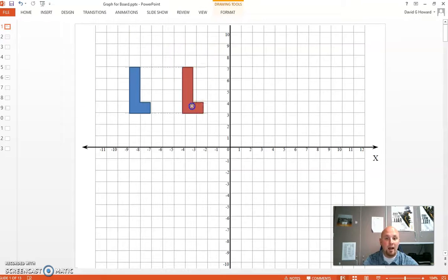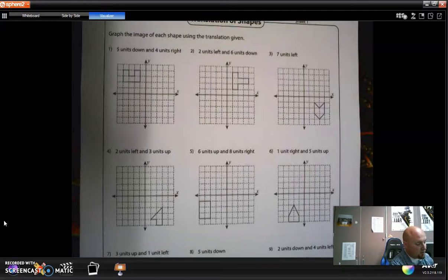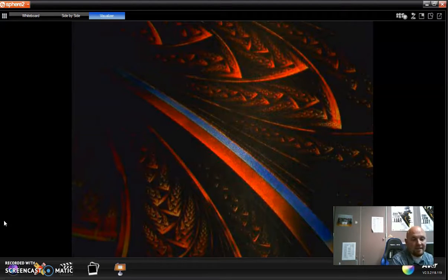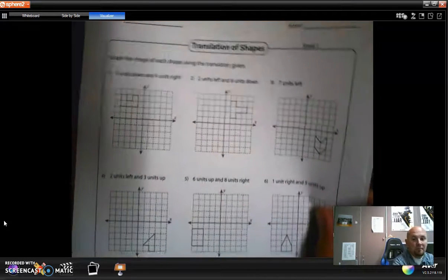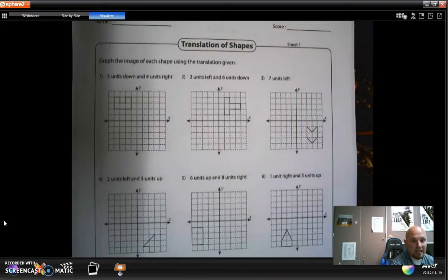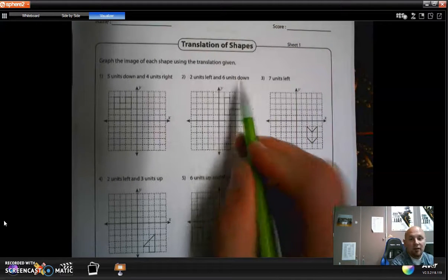We're sliding that shape around the coordinate grid. Now I'm going to show you the assignments. On the assignment I've given you, looks like nine problems where you're going to practice translating the shape. For example, right here, this little sideways T.